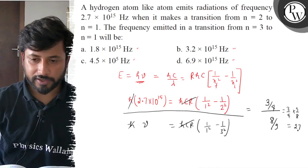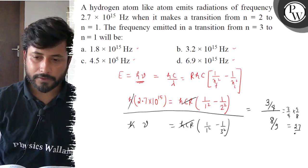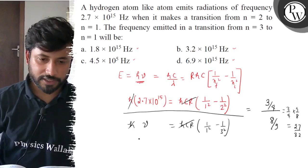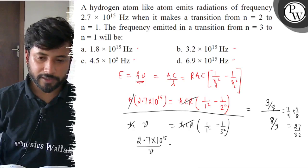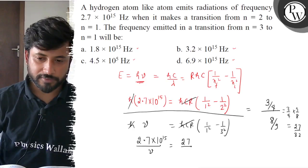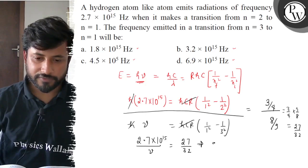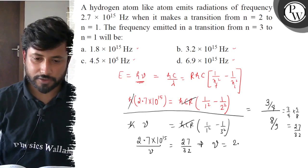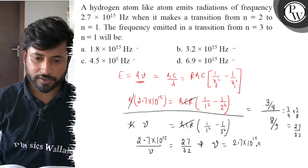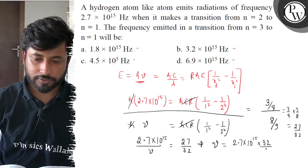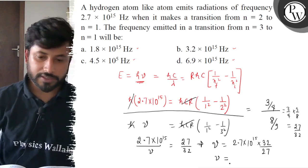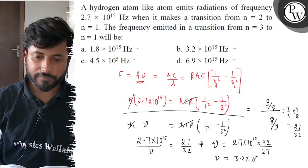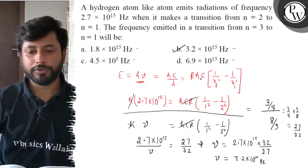So here we take our frequency ratio. 2.7 into 10 to the power 15 divided by new equals to 27 by 32. So the frequency will be 2.7 into 10 to the power 15 into 32 divided by 27. So here we get 3.2 into 10 to the power 15. Final answer is option B, 3.2 into 10 to the power 15.